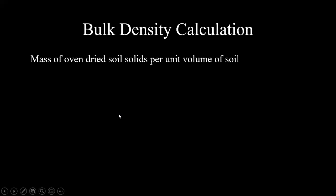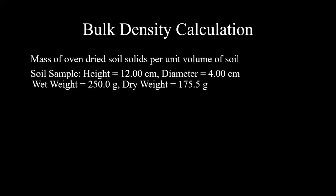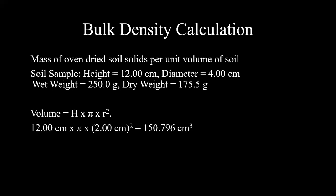First we're going to calculate bulk density. The definition of bulk density is mass of oven dried soil per unit volume of soil. Because of that we need various information from the soil sample including height, diameter, wet weight, and dry weight. We also need to calculate volume. The equation for volume is height times pi times radius squared, so we take the height times pi times the diameter divided by 2, which gives us 150.796 centimeters cubed.